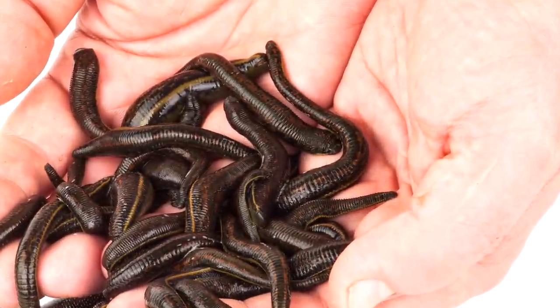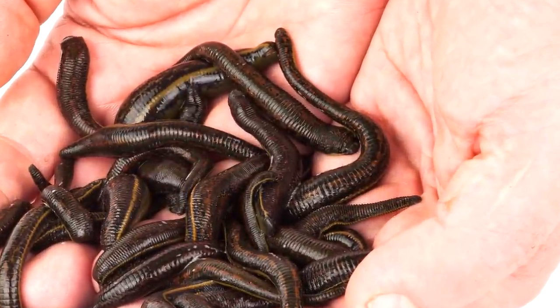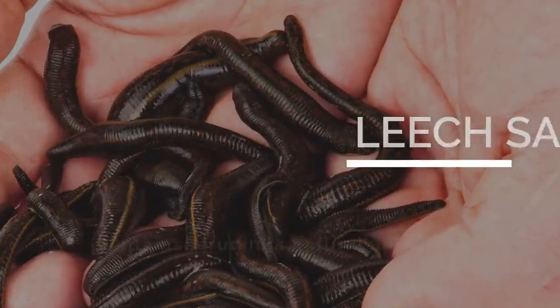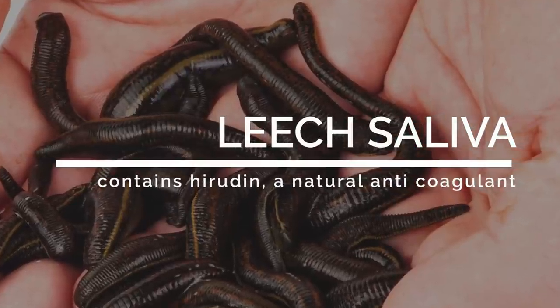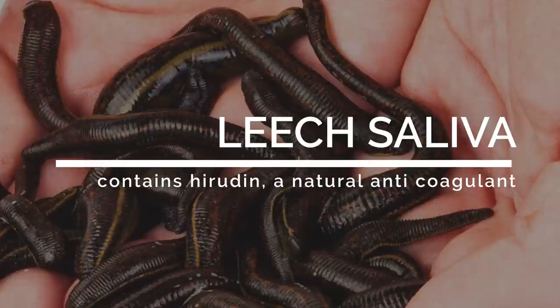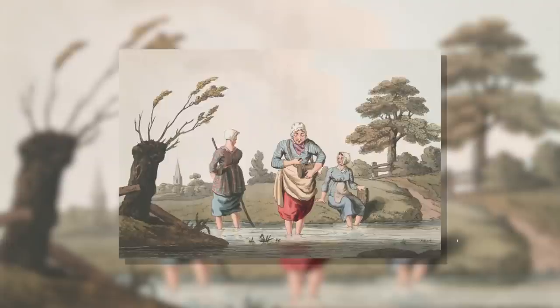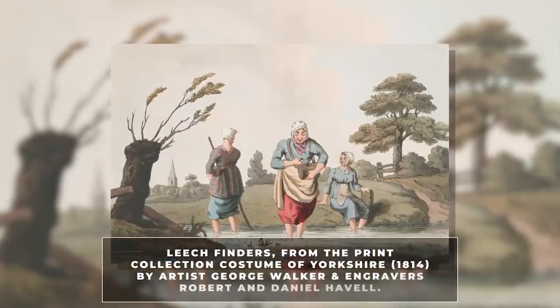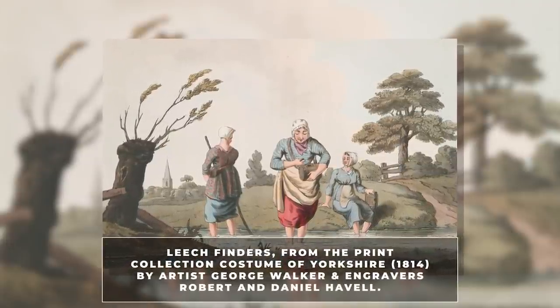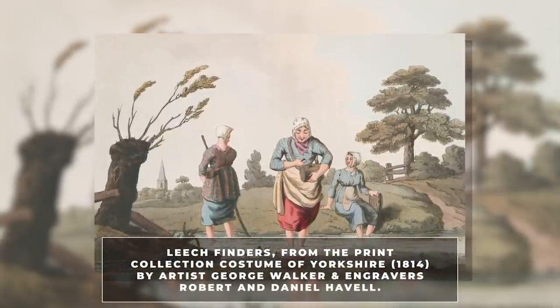And in part because of his advocacy, over five to six million leeches were used each year in Paris by the 1830s. As it turns out, we know now that Broussais isn't actually completely wrong. Leech saliva contains hirudin, a natural anticoagulant, so he did have some good points, even if they can't simply be used for everything under the sun either.